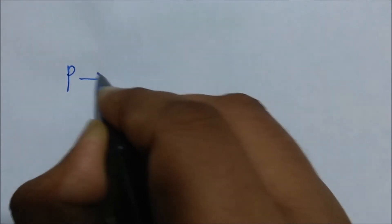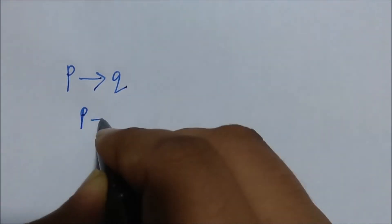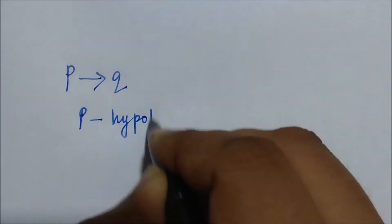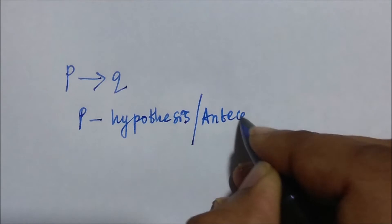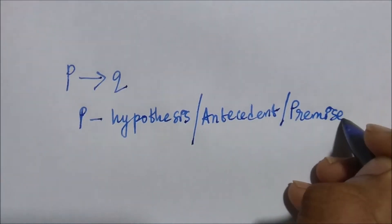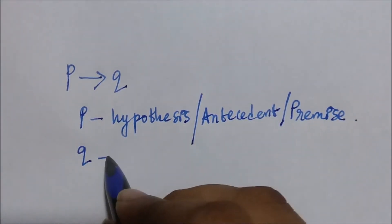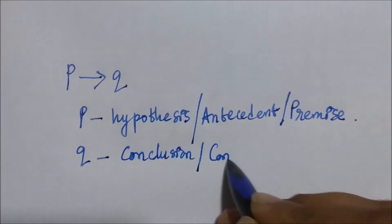If you take a conditional statement P implies Q, P is called the hypothesis or antecedent or premise, and Q is called the conclusion or consequence.